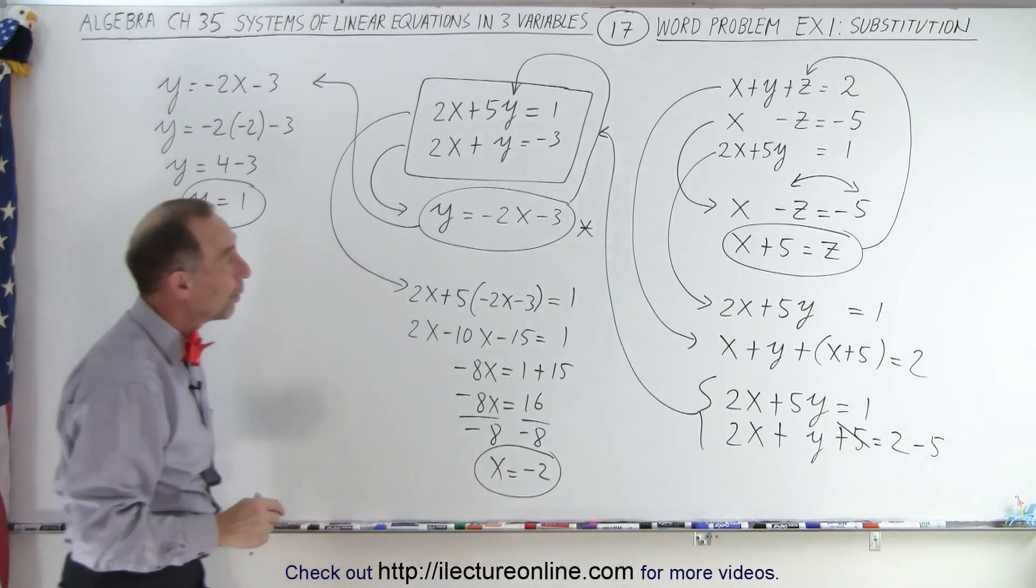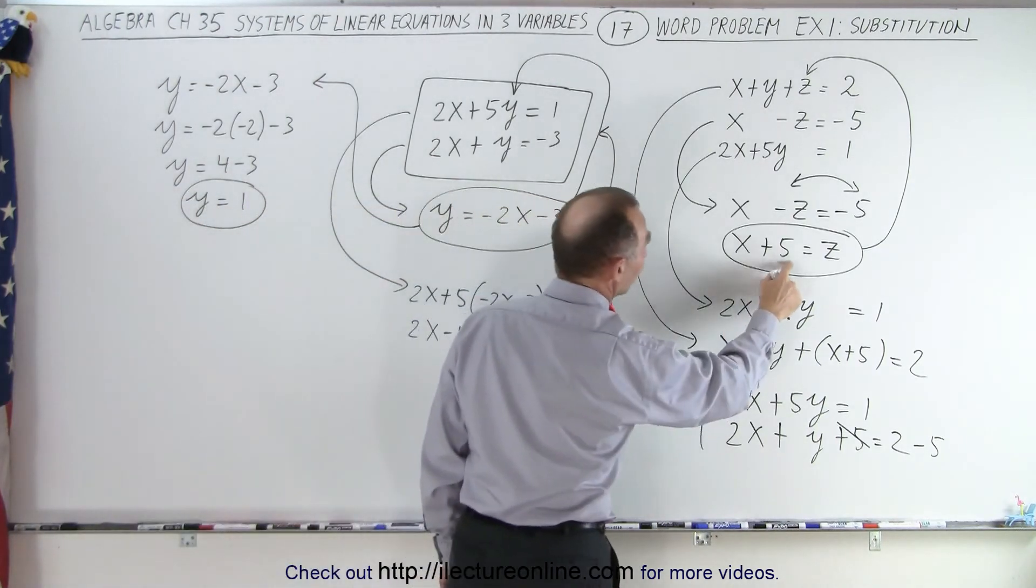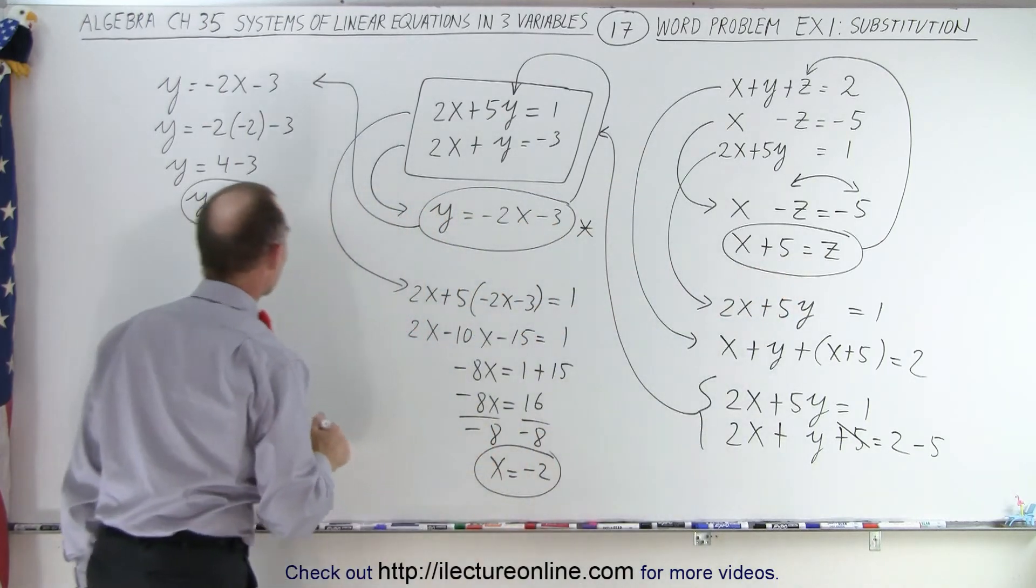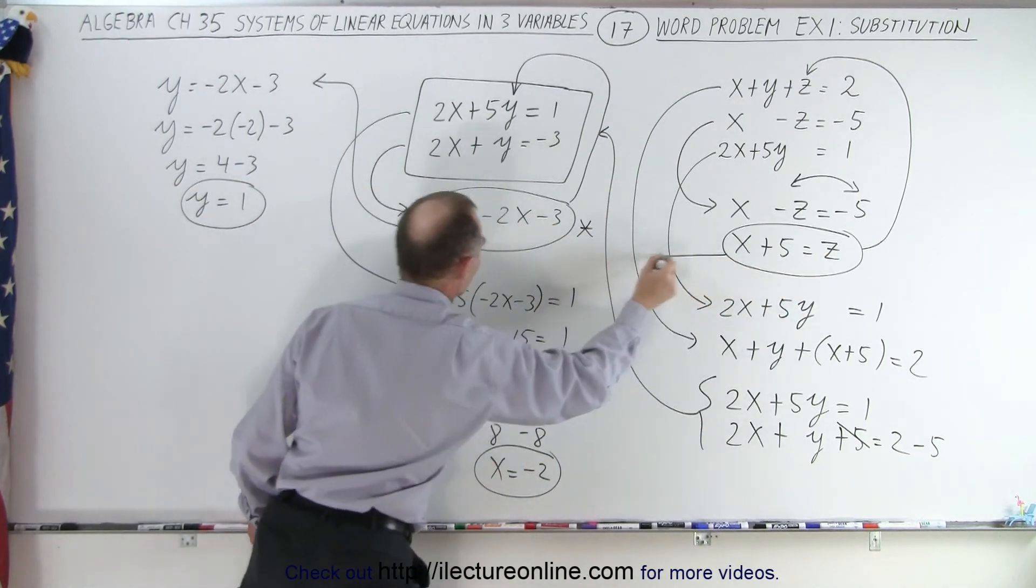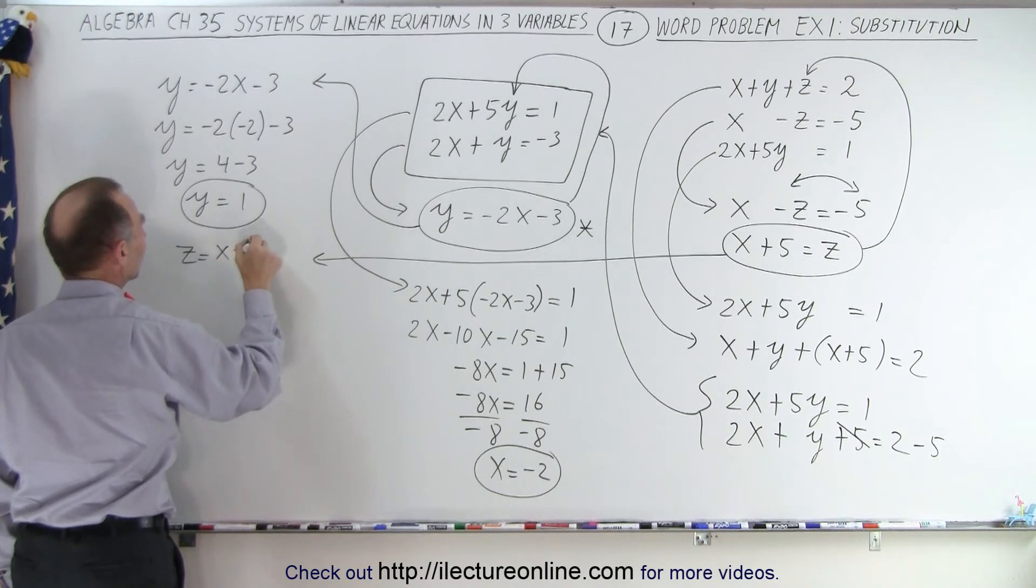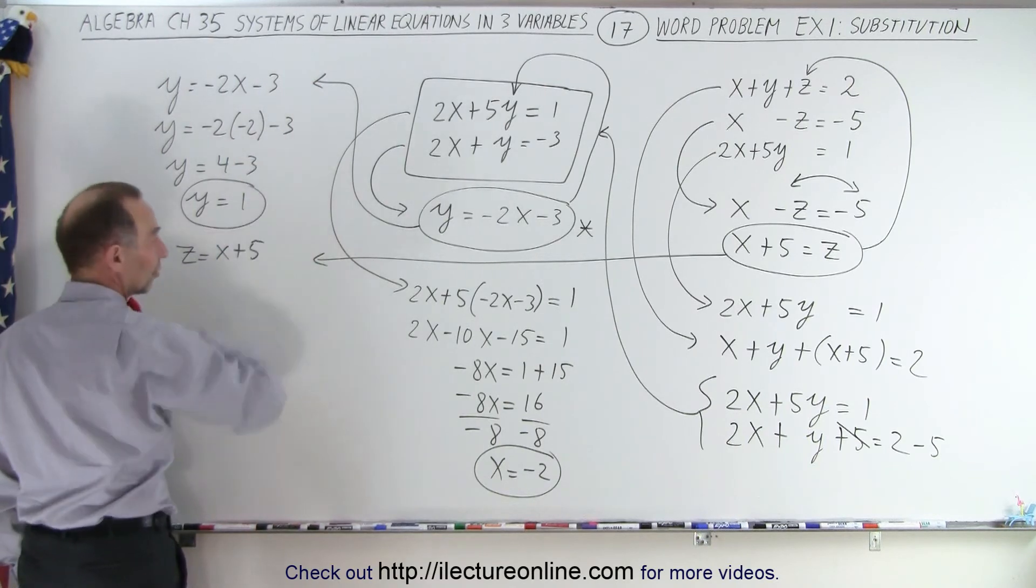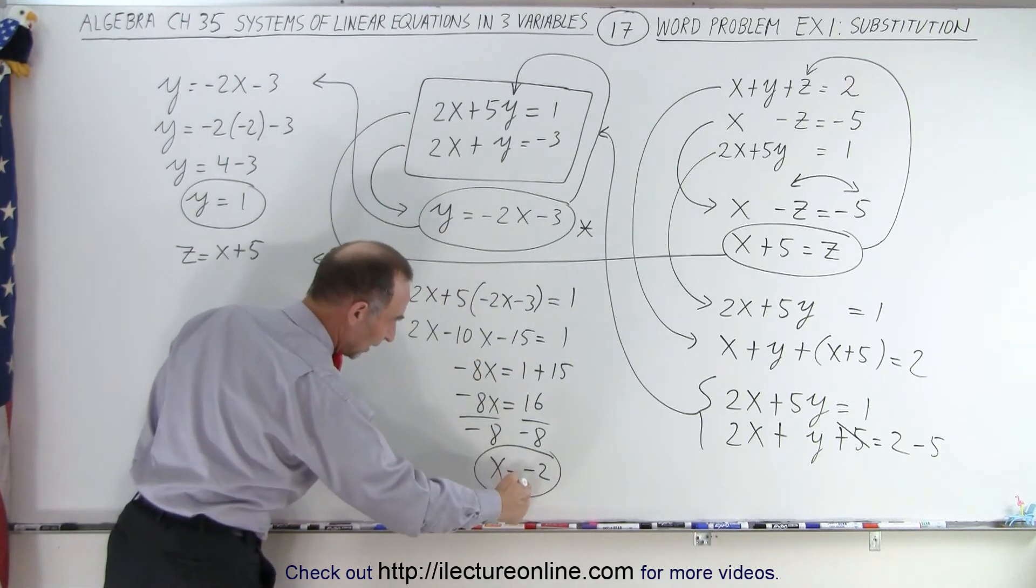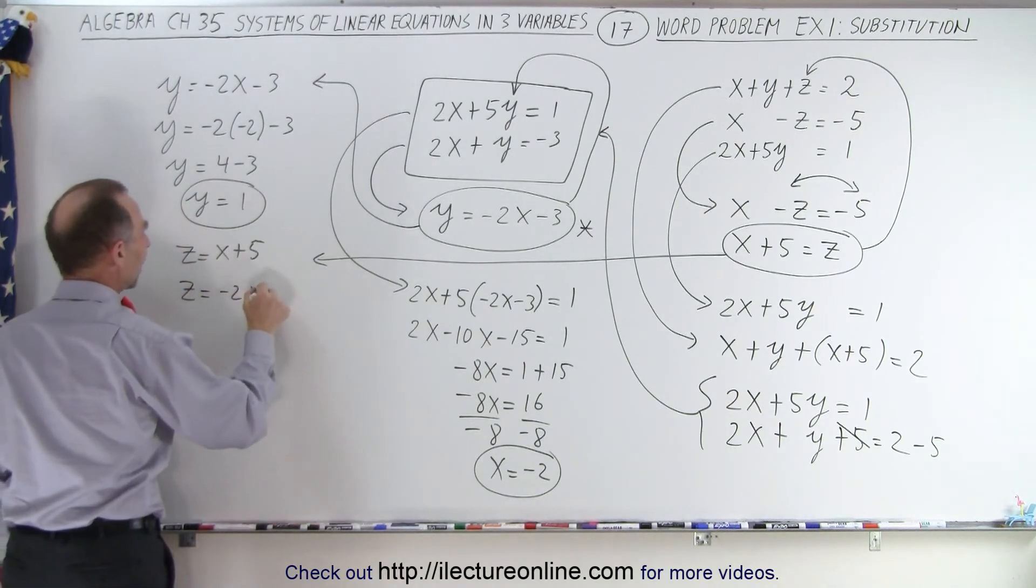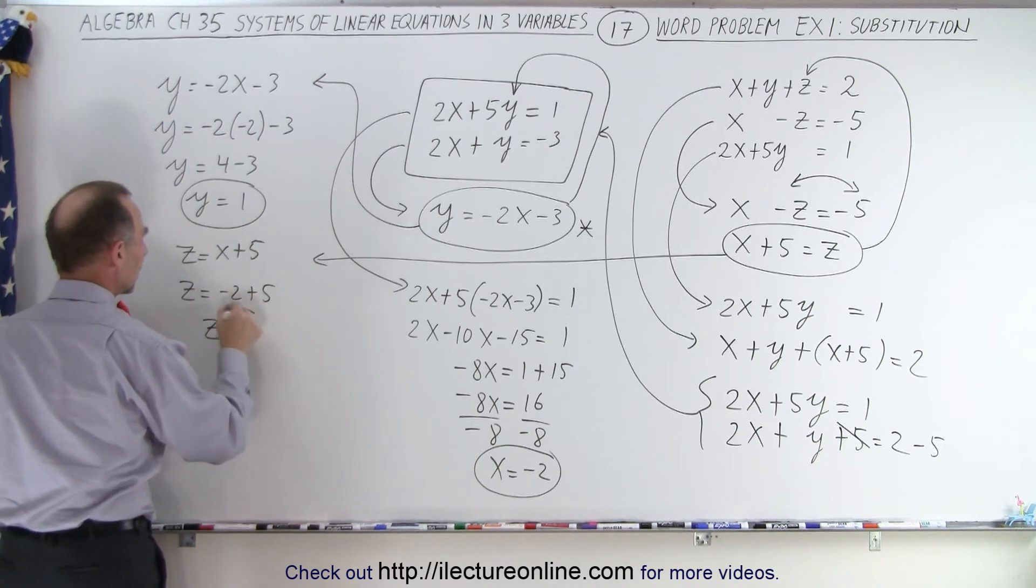And finally, we go back to one of our equations where we can solve for z. So here we can write that z is equal to x plus 5, and x is, right here, x equals negative 2, so z equals negative 2 plus 5, or z is equal to 3.